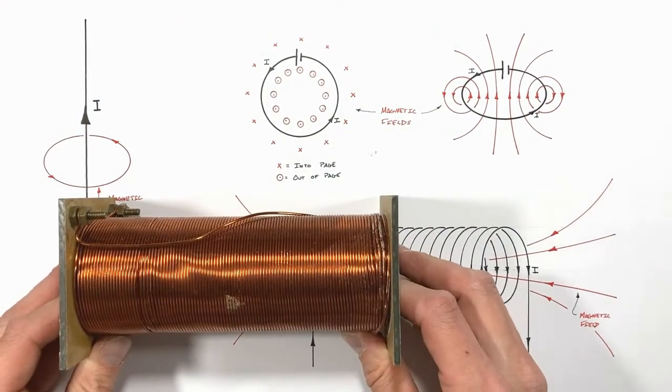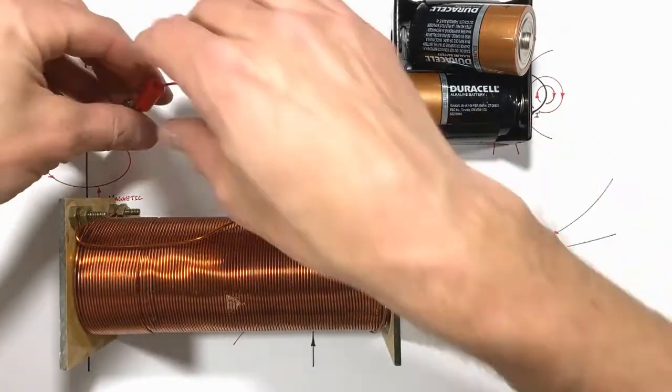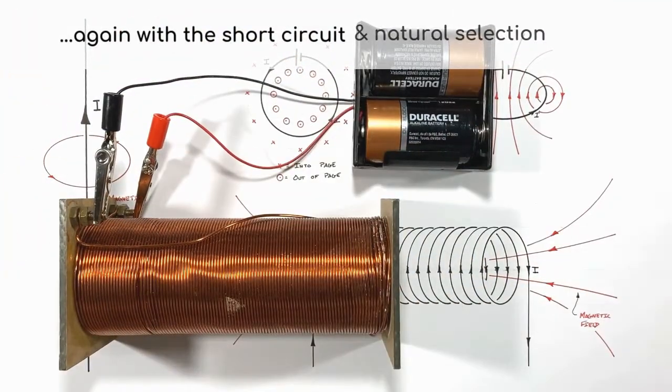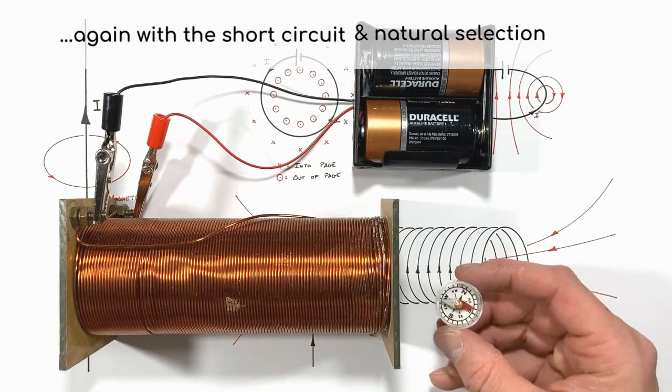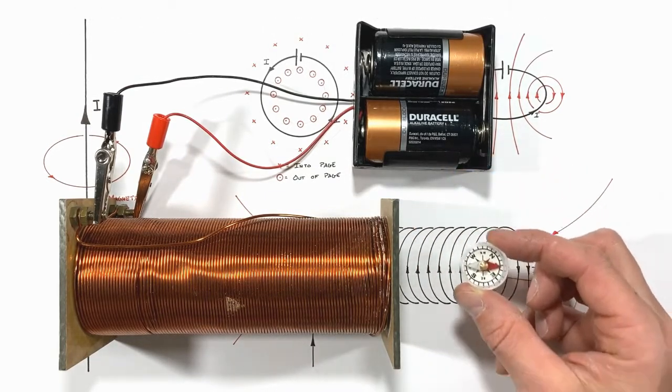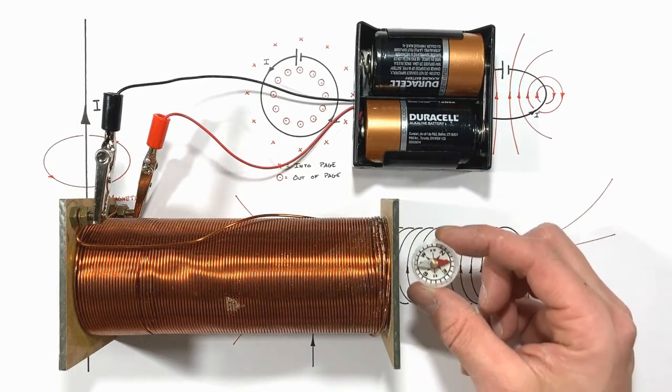Here we have a large solenoid, and if I hook this up to a battery, this solenoid is going to produce a magnetic field. You can see that on this compass. The compass is pointing or aligned with the magnetic field coming out the end of the solenoid.